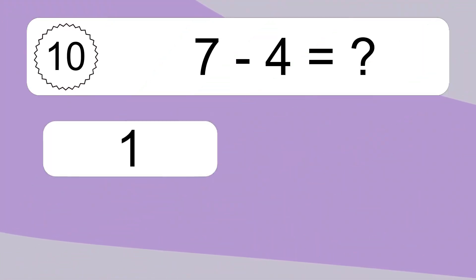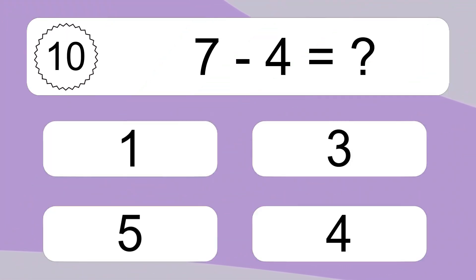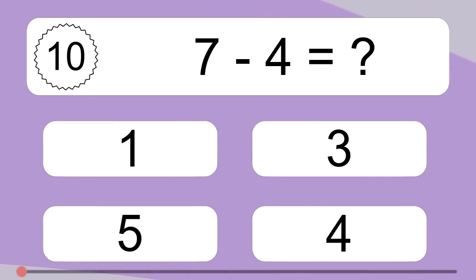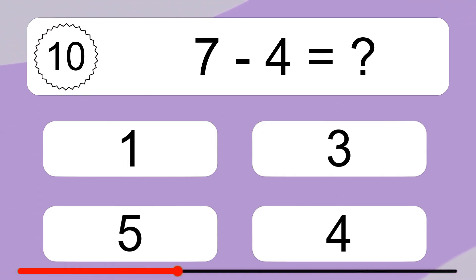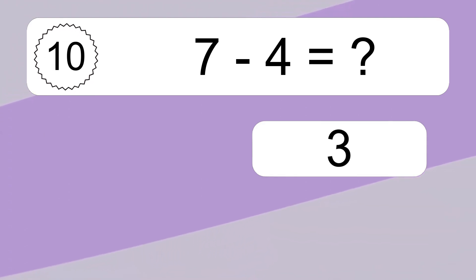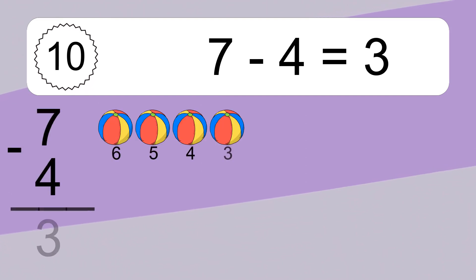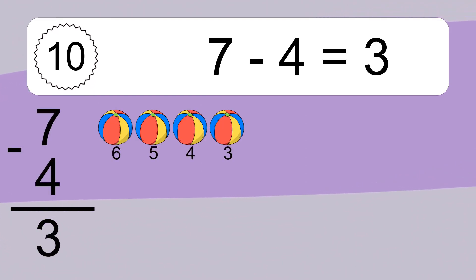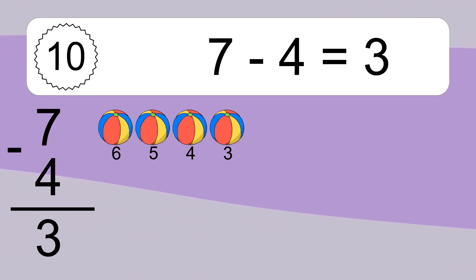7 minus 4 equals what? 7 minus 4 equals 3. Let's count it. 6, 5, 4, 3.